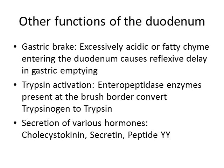Other functions include activating trypsin secreted by the pancreas. Enteropeptidase enzymes at the brush border of the duodenum convert trypsinogen to trypsin in its active form. That helps activate all the other proteolytic enzymes and also breaks down proteins itself, so proteins are ready for absorption by the time contents reach the jejunum.